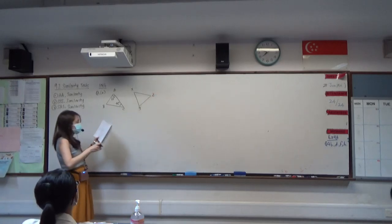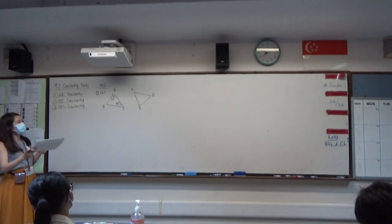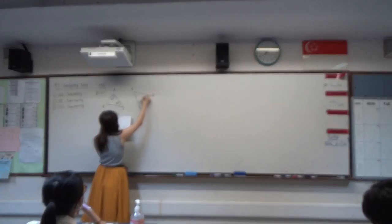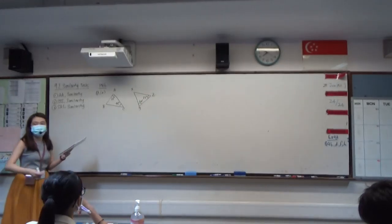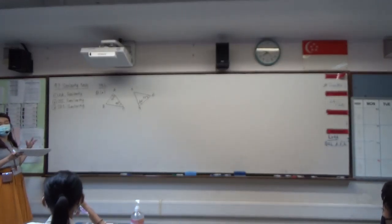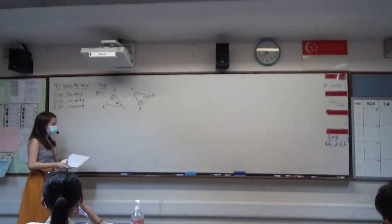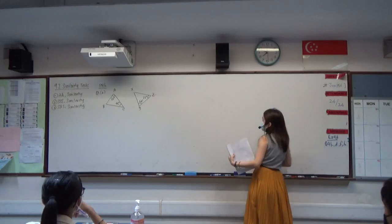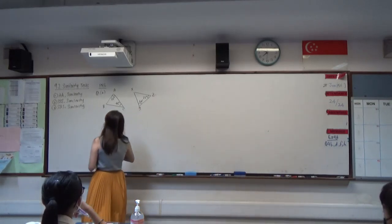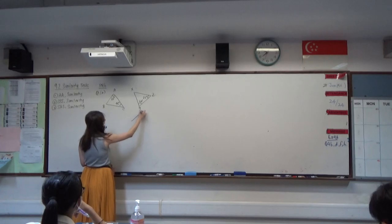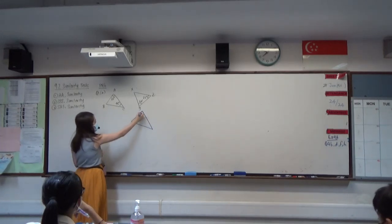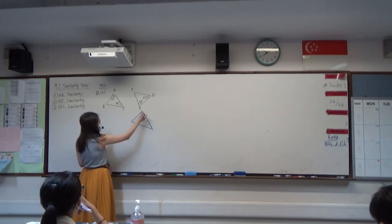In question 1a, we want to determine whether the two triangles are similar or not. So what we will do is to try to arrange the two triangles first. When it comes to similarity, it needs to be of the same shape, and then the sizes need to be proportional. So in this case, let's just turn the triangle on the right around to be of similar orientation. We know that down here must be 60 degrees.